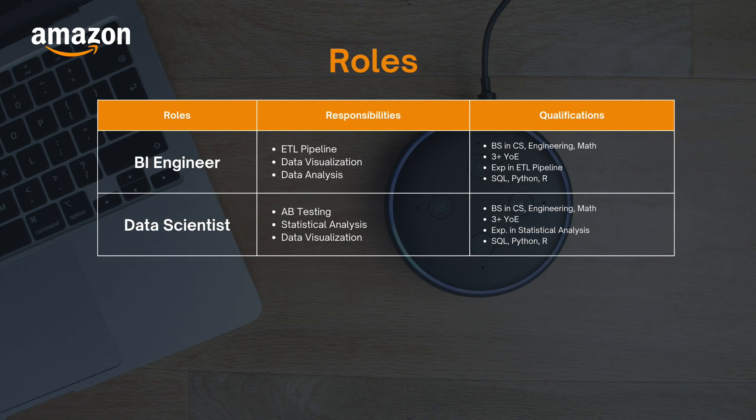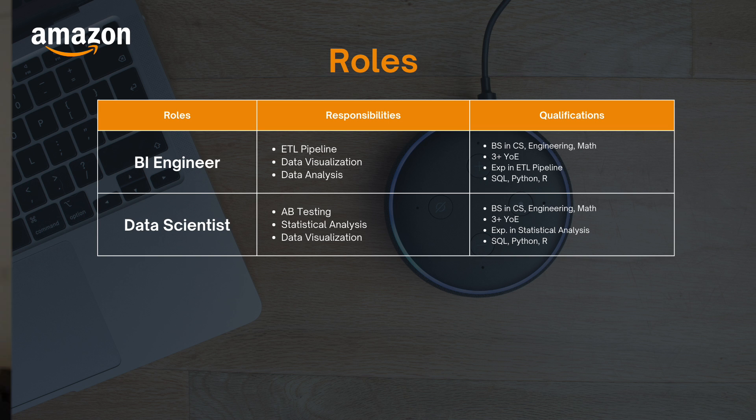The next role is data scientist. Data scientists focus on experimentation, A/B testing, statistical analysis, and data visualization. The qualifications required are a BS in computer science, engineering, or math, three years of experience, experience in statistical analysis, and programming languages like SQL, Python, and R.